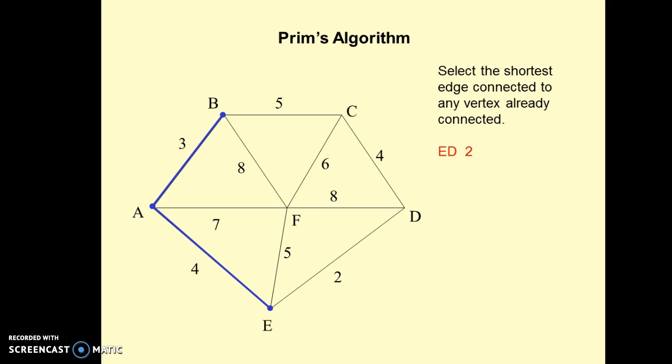Then again we find out all the edges associated with A, B, and E nodes. These three are active nodes now. Which one is the minimum one? We find that ED is the minimum one. So we find ED.